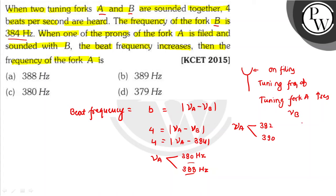Now the frequency of B is given as 384. With 382, we will find the difference is 2. With 390, the difference is 6.